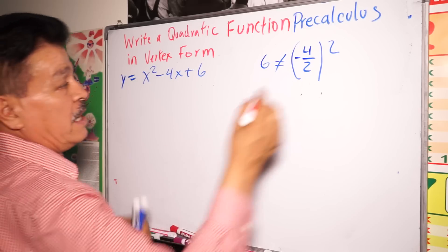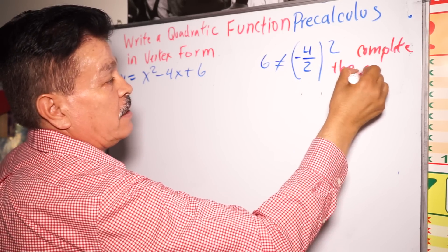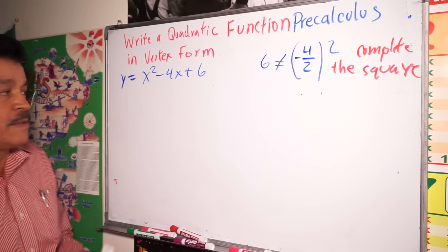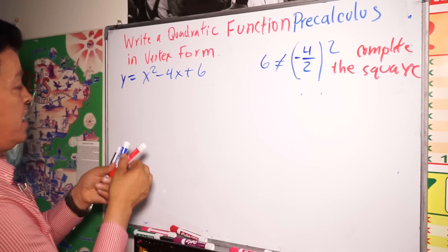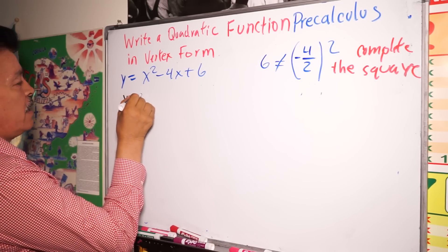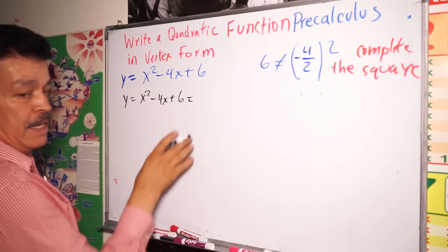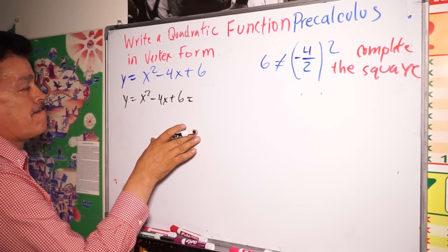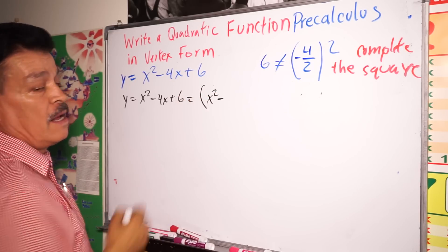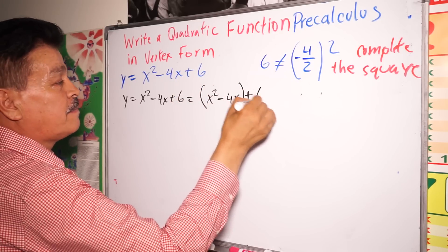So we have to complete the square in this problem. Next step: write the problem here. Y equals x to the second power minus 4x plus 6. We have to divide: four divided by two. Complete the square. So: x squared minus 4x plus (minus 4 divided by 2) to the second power, plus 6.